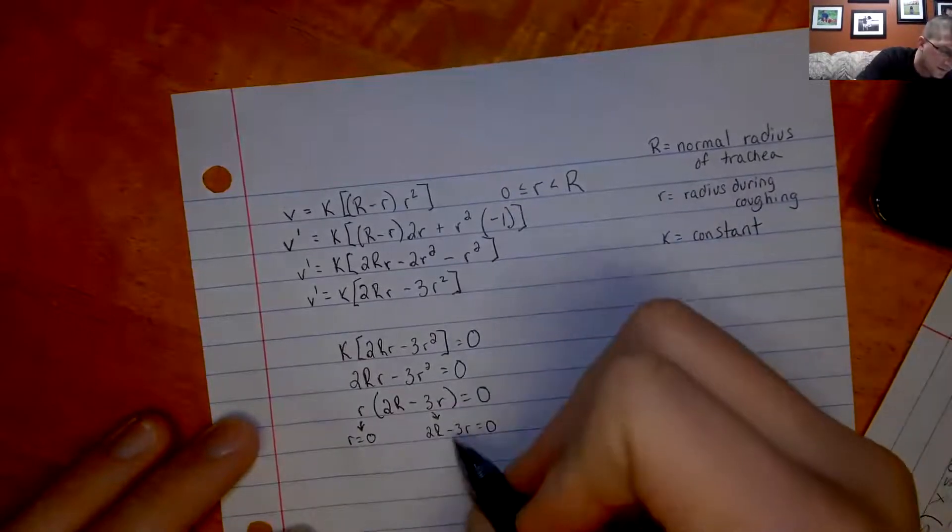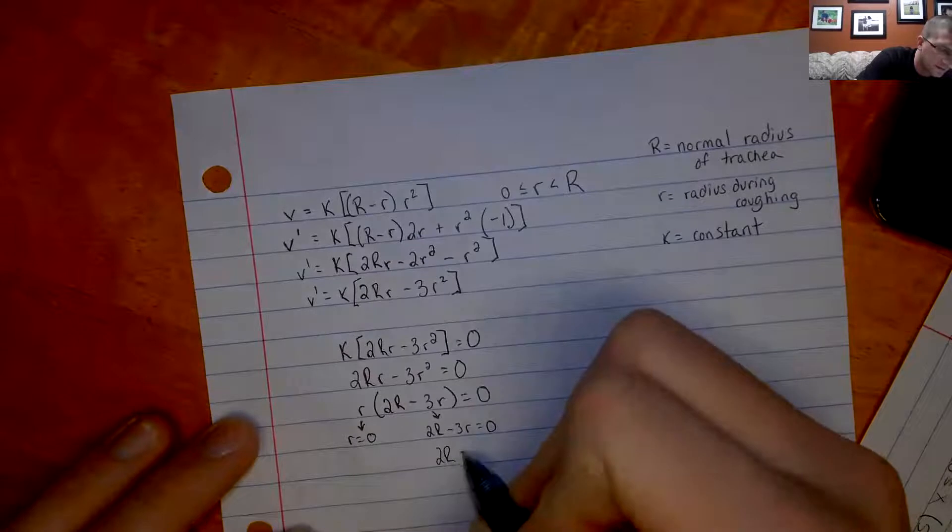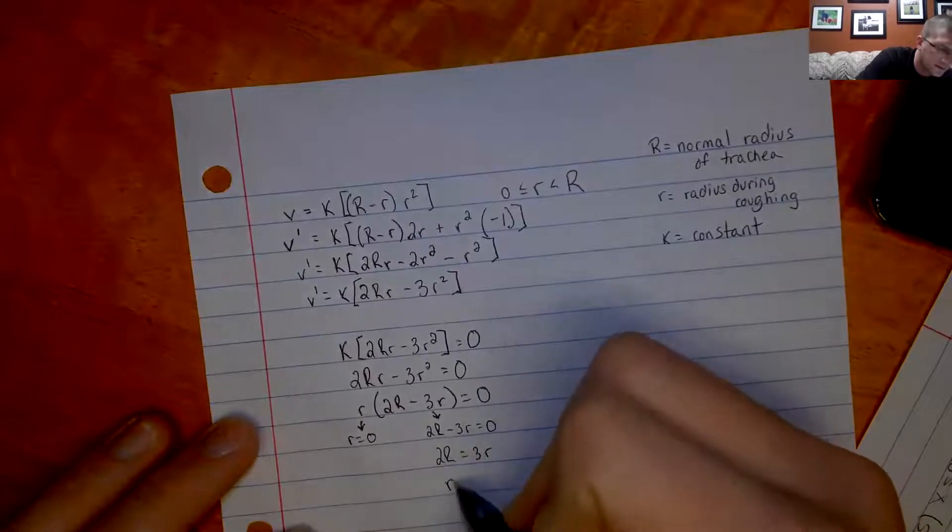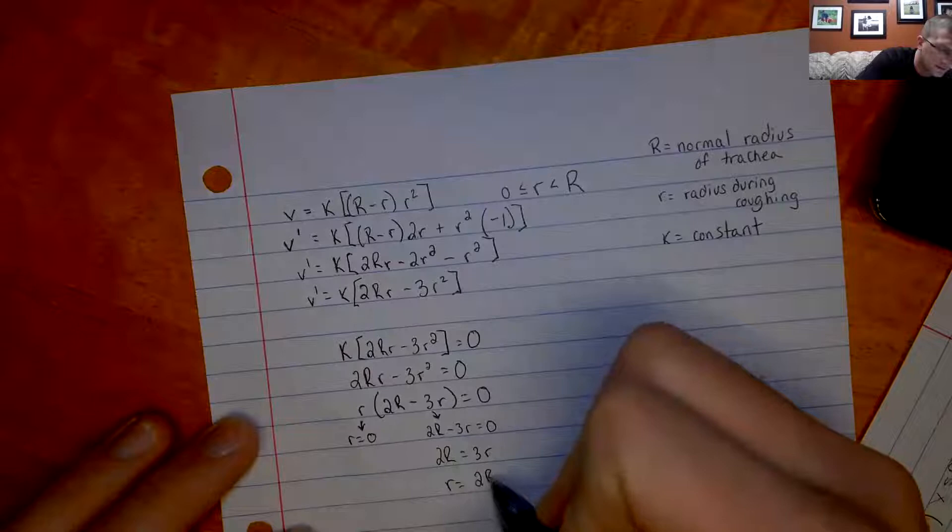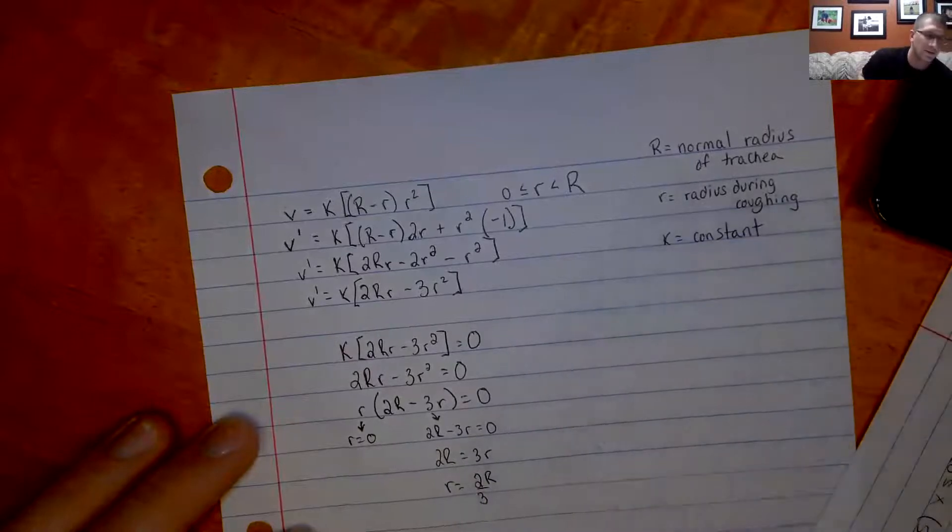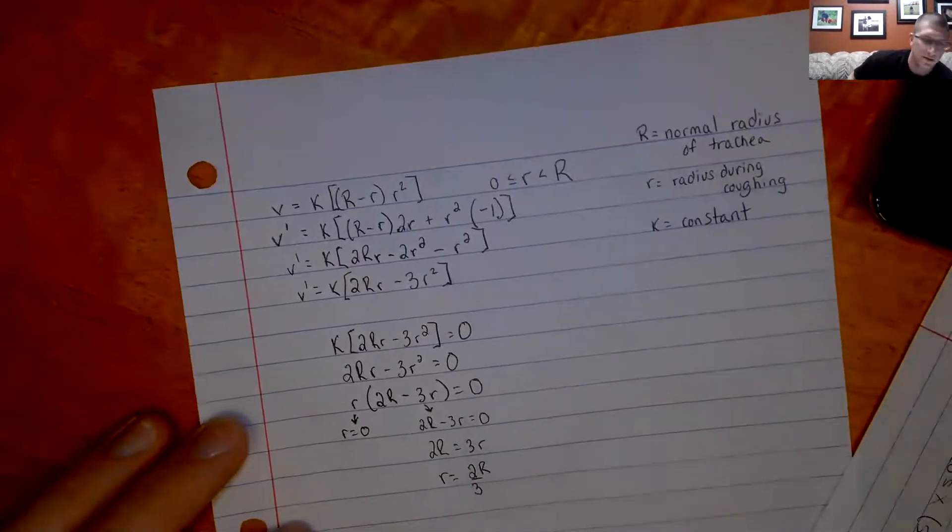So if I want to solve for r, I'm going to add my 3r over, divide by 3. So r is going to be 2 thirds capital R. So 2 thirds the normal radius of the trachea.